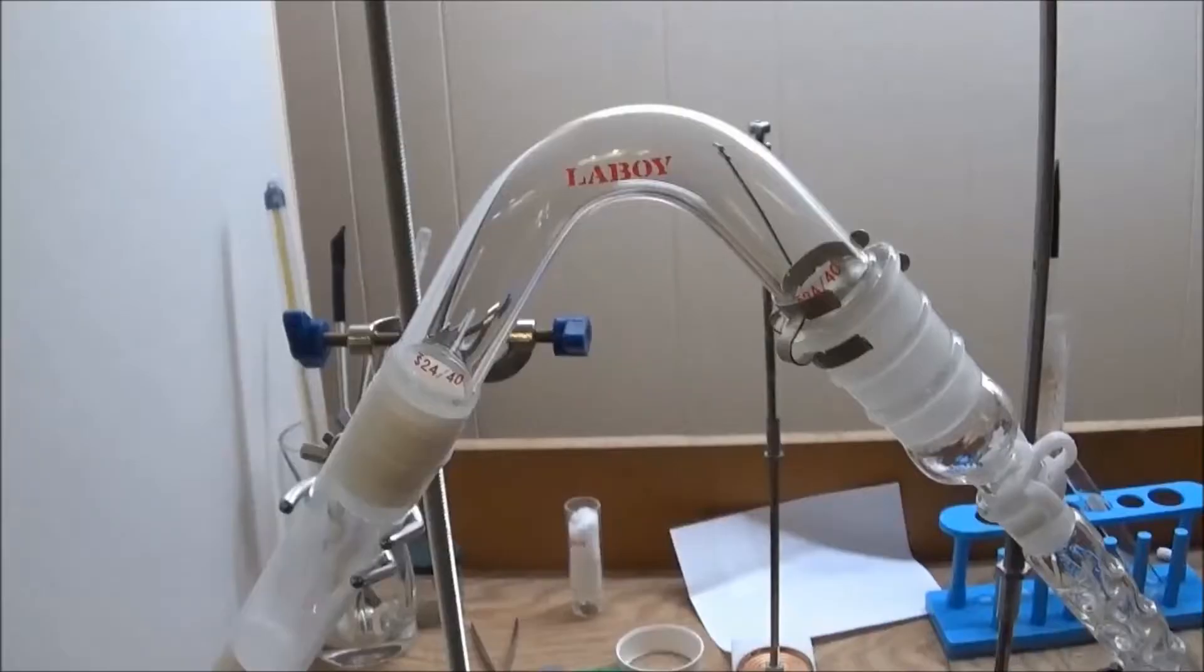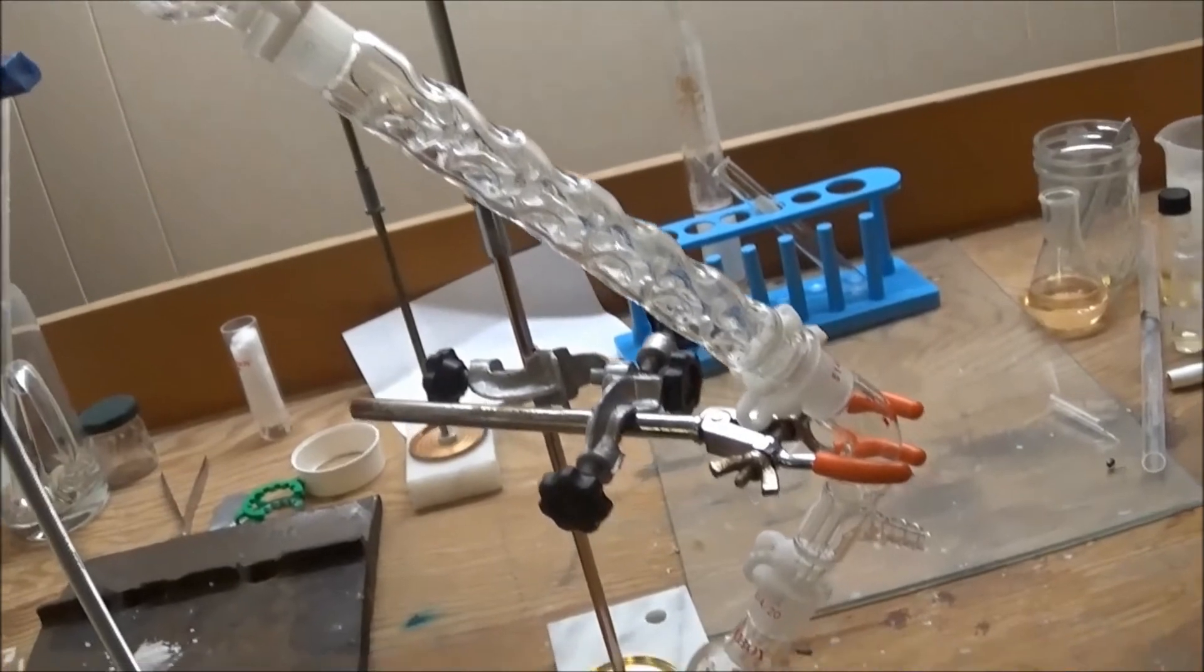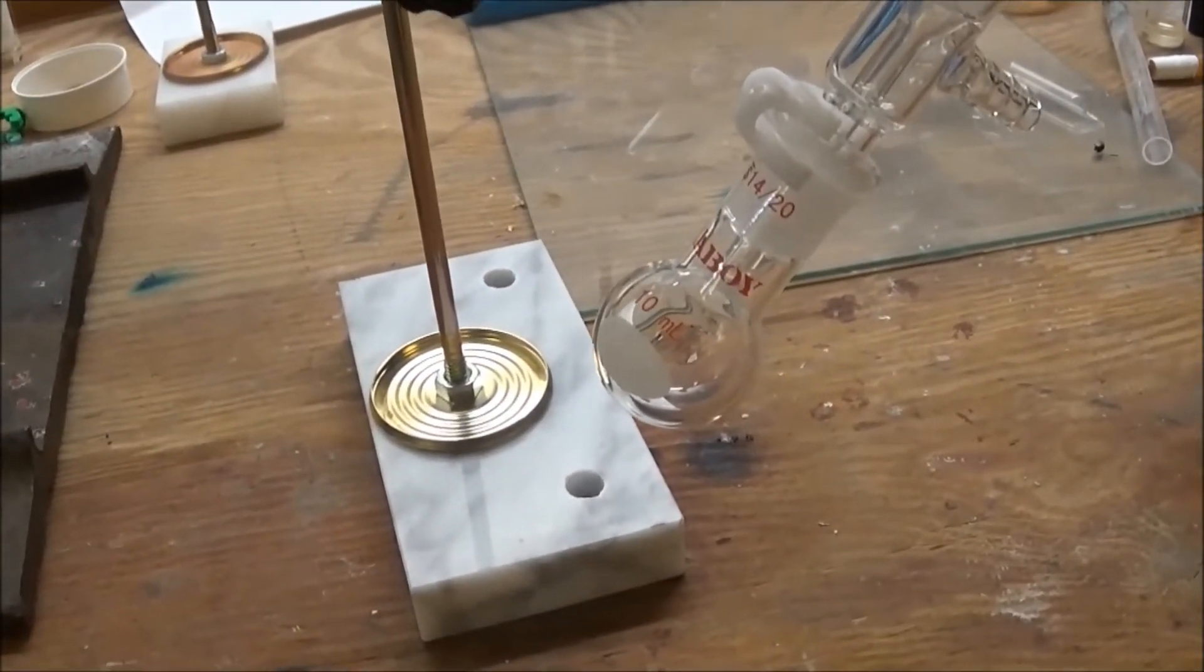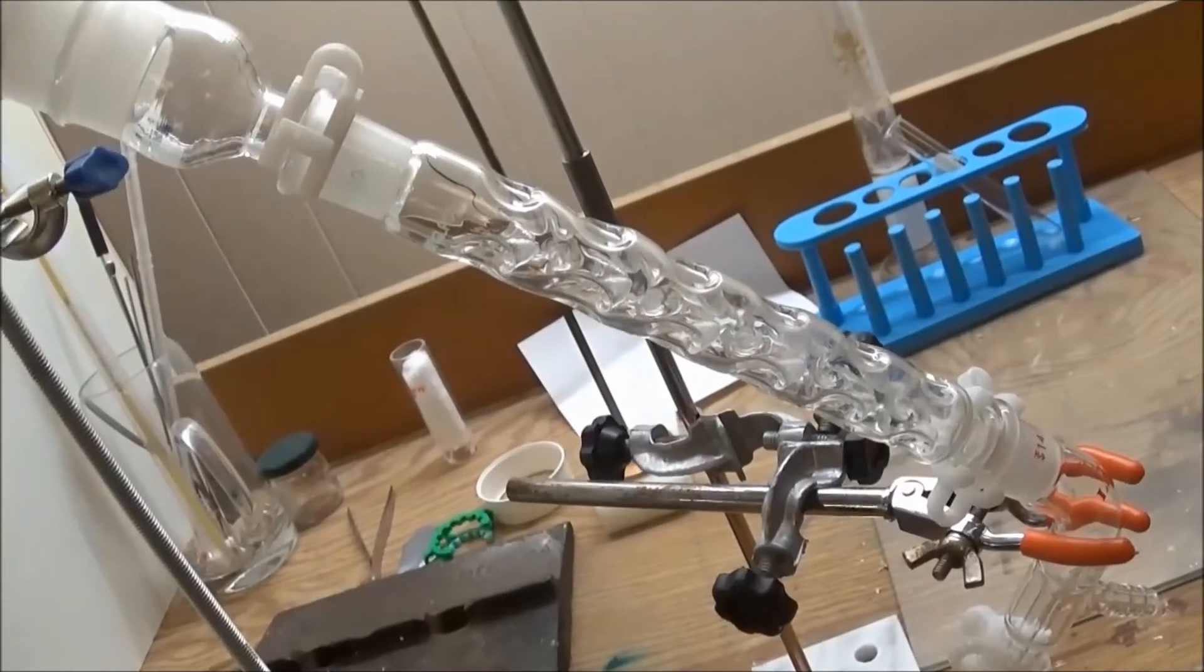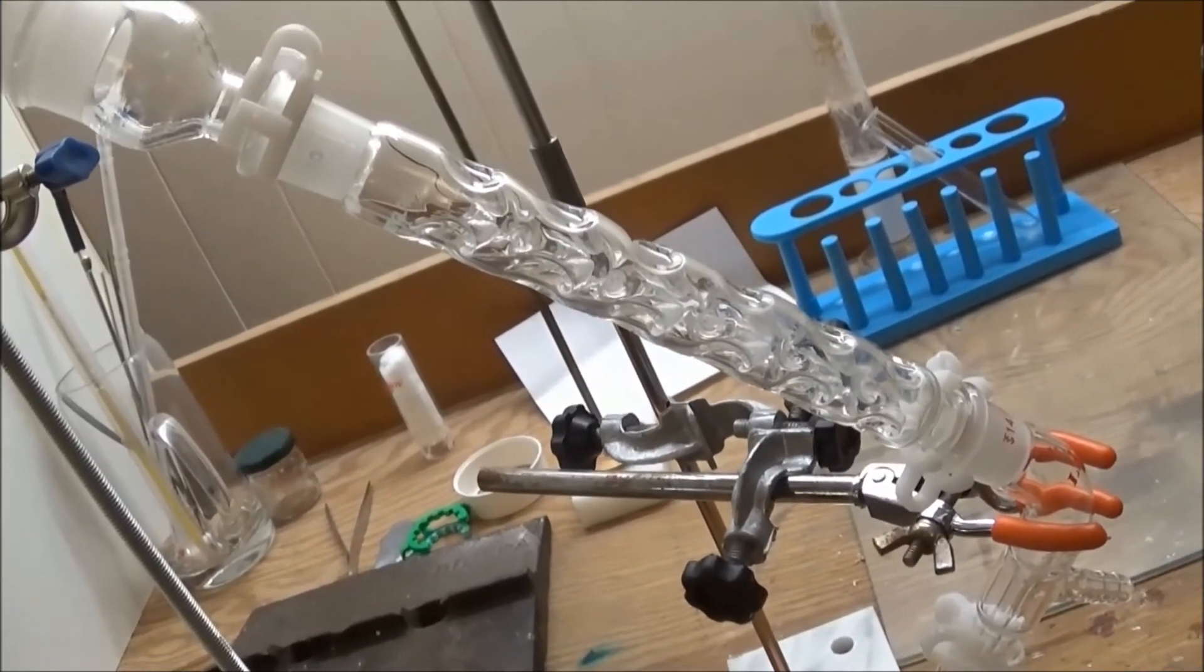This consists of a Vigreux column, a vacuum takeoff adapter, and a receiving flask. The Vigreux column isn't necessary, I just used it as an air condenser. A water-cooled condenser would work even better.